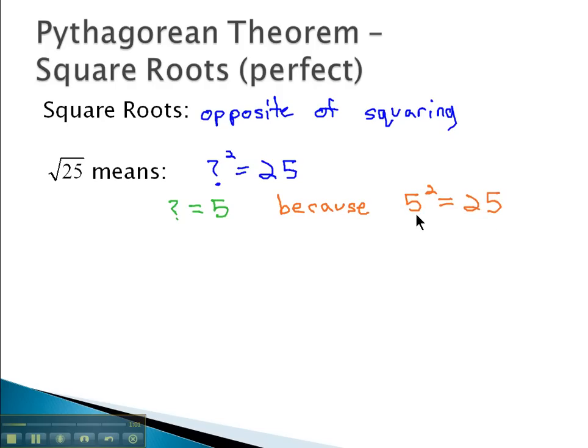And so because 5 squared is 25, the square root of 25 must be 5. Square roots are asking, what number squared gives us this number?